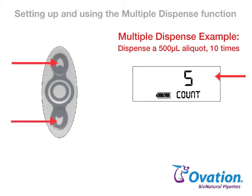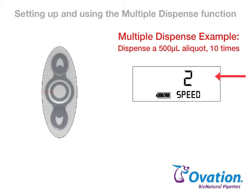Press and release the up or down arrow to change the number of dispenses. Then press and release the center button to lock in the new count setting and advance to the current speed setting. Press and release the up or down arrow until the desired speed setting is displayed.